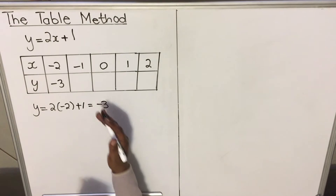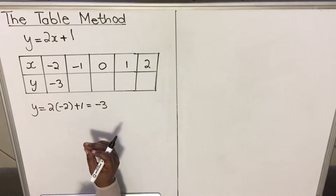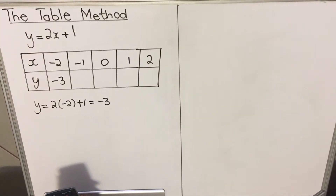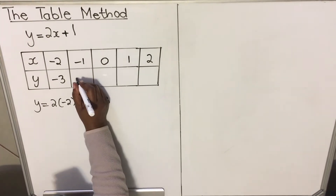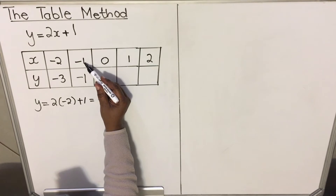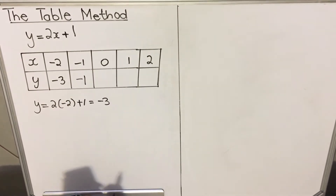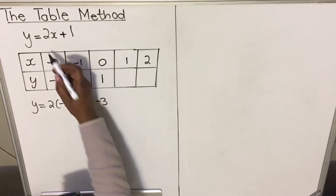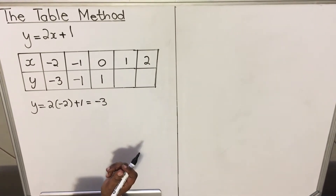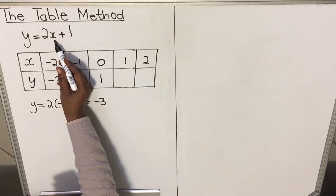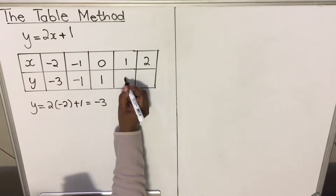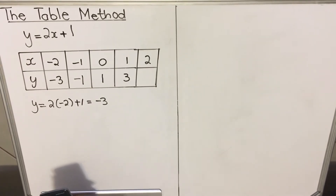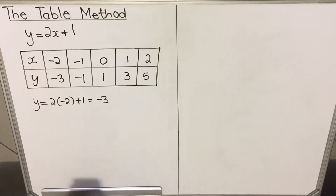The sooner you finish the table and the more accurate you are, the more time you'll save. When x is -1: 2 times -1 plus 1 gives y = -1. When x is 0: 2 times 0 plus 1 gives y = 1. When x is 1: 2 times 1 plus 1 gives y = 3. When x is 2: 2 times 2 plus 1 gives y = 5.